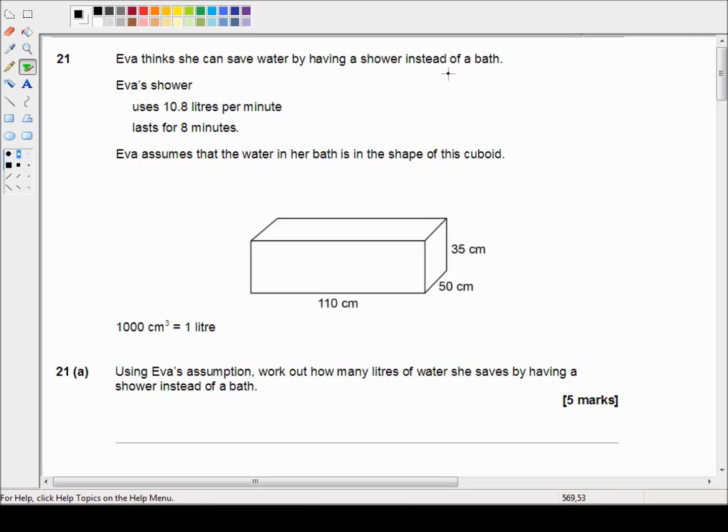Eva's shower uses 10.8 liters per minute and lasts for 8 minutes. Eva assumes that the water in her bath is in the shape of this cuboid: 110 centimeters by 50 centimeters by 35 centimeters.